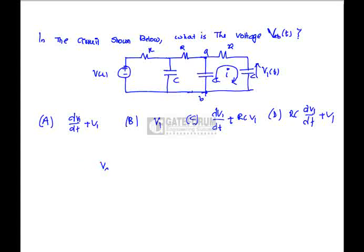Nothing but VAB of T equals to IR plus V1 of T. Here, I we can write as C dV1 of T by dT. Hence, VAB of T is nothing but RC dV1 by dT plus V1. Because V1 is a function of T, there is no need to indicate separately. Hence, option D is correct.